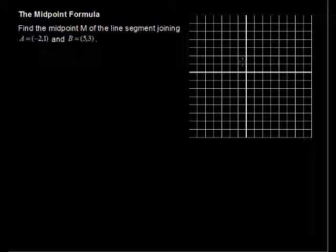Let's first plot these two points on the coordinate plane. So we have A at the coordinates negative 2, 1, right here. This is A, and point B at the coordinates 5, 3. There we are, and we can draw a line segment to connect those two. There's our line segment.